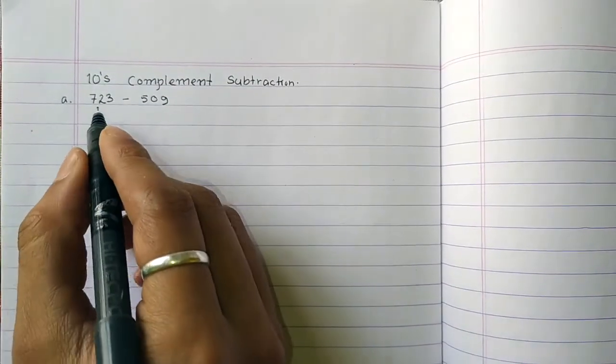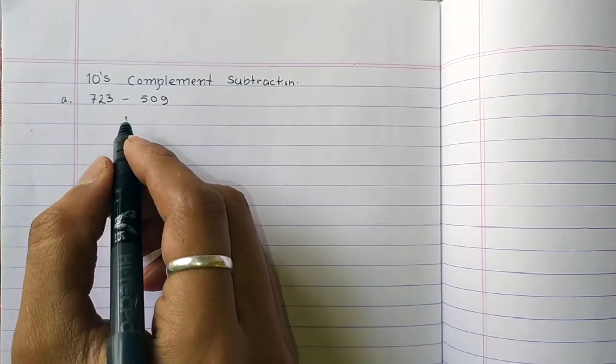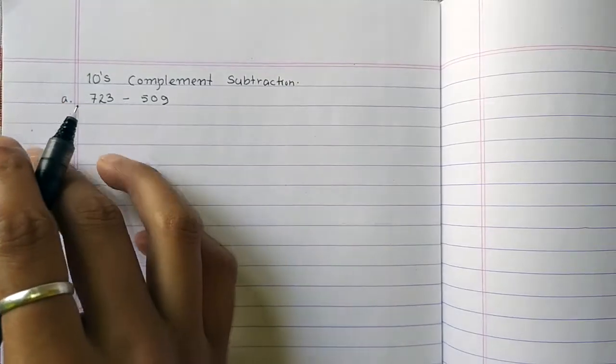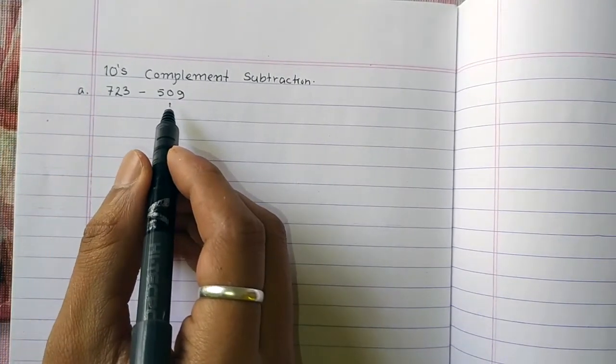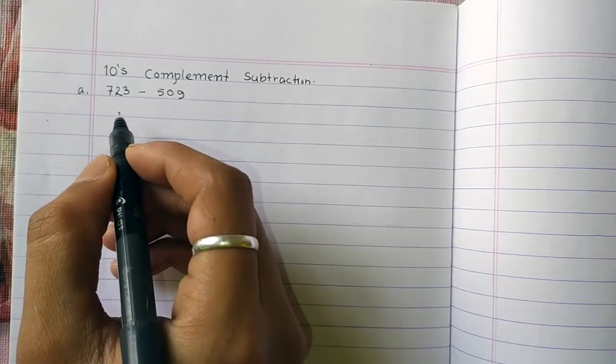In this video, we are going to take a 10's complement to subtract decimal numbers. We are going to give you an example: 723 minus 509. We are going to have three steps.